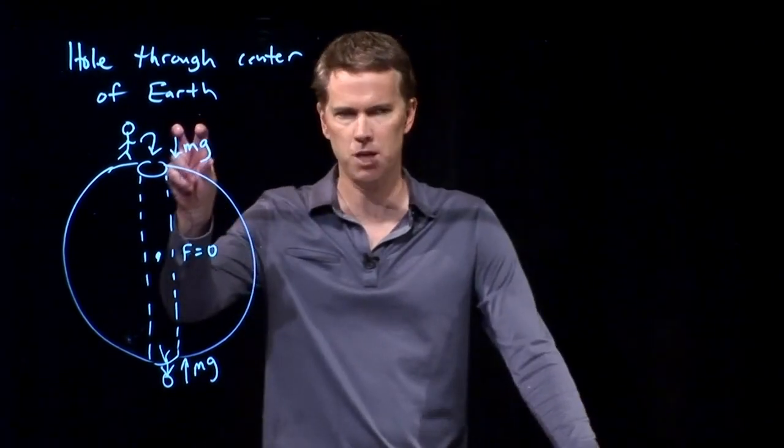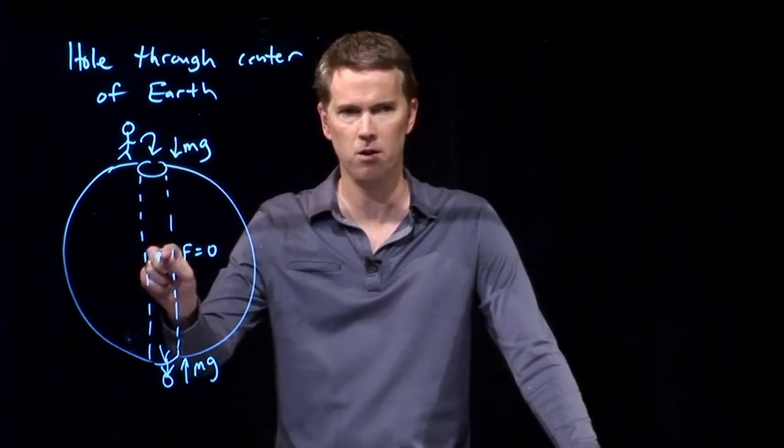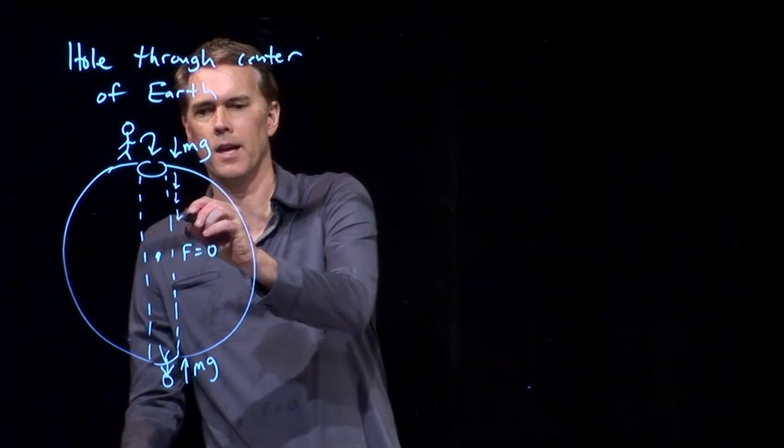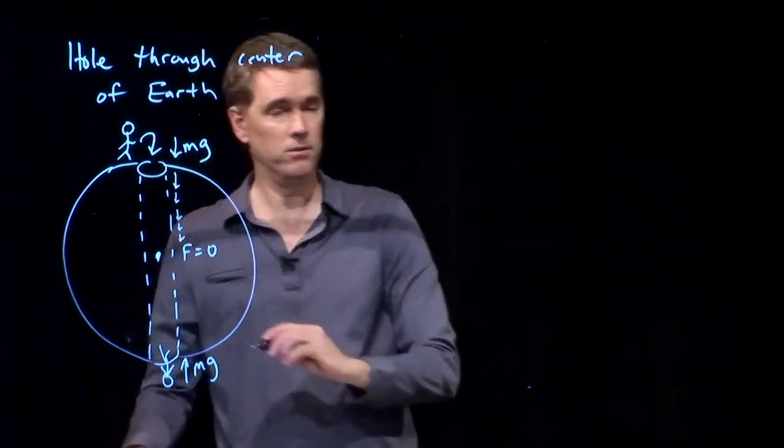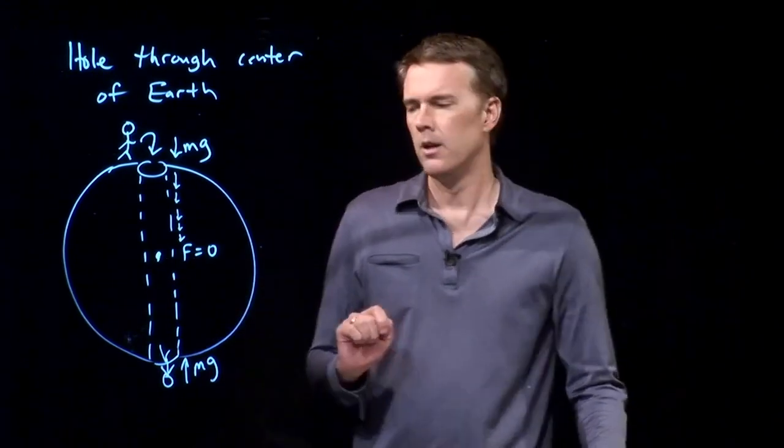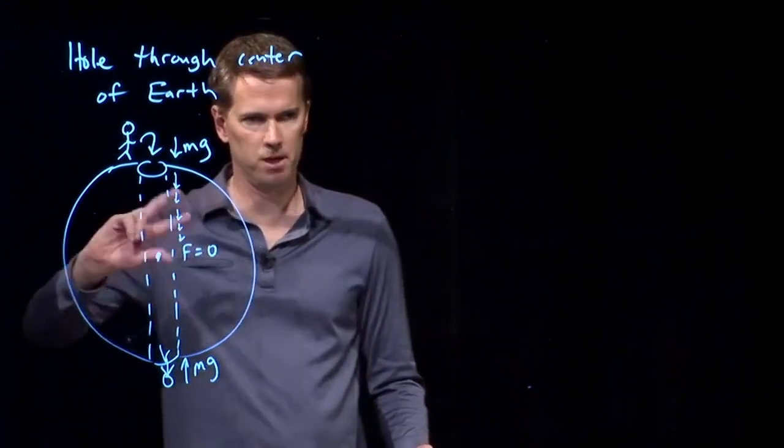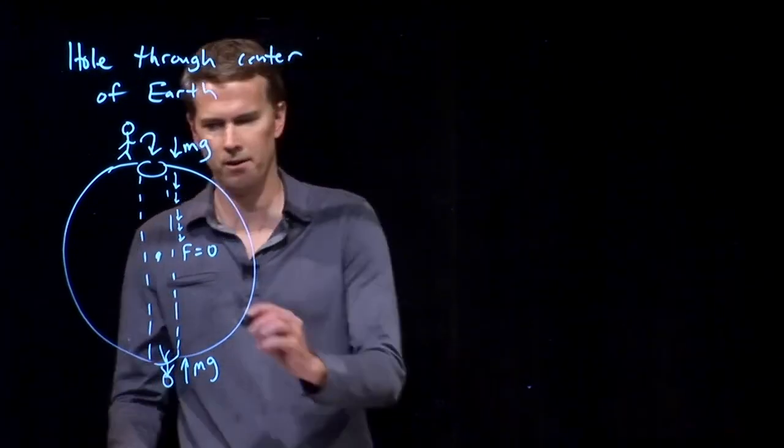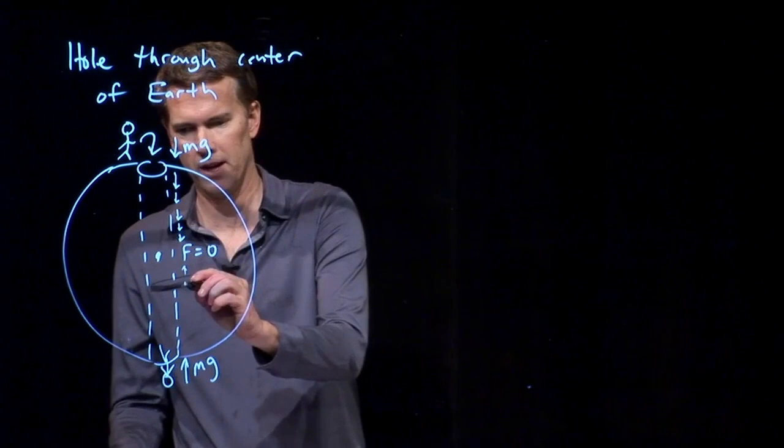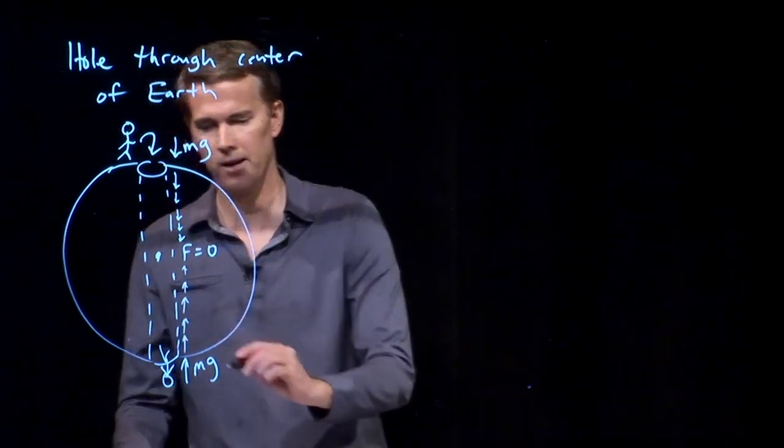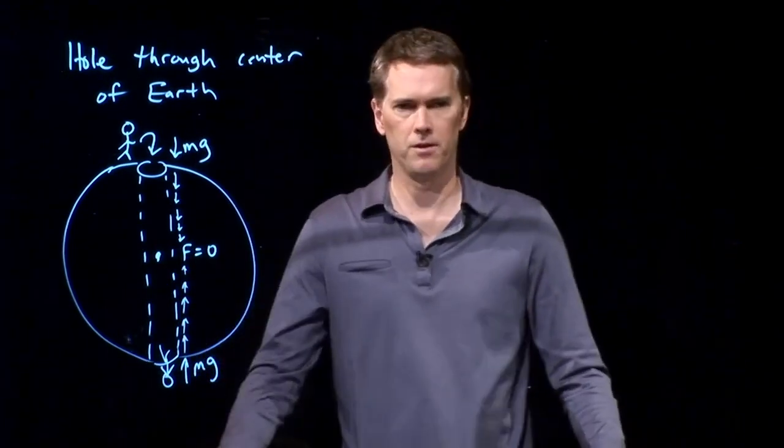Gravity was mg pointing down. It goes to zero, but it's pointing down the whole way. It, of course, gets smaller and smaller, eventually coming to zero. But it never points the other way until he gets on the other side of the center. And once he gets on the other side of the center by symmetry, that force has to get bigger and bigger in magnitude, pointing back towards the center.